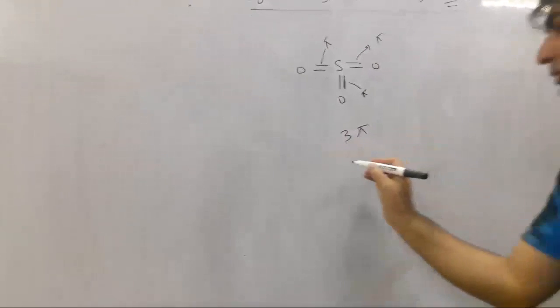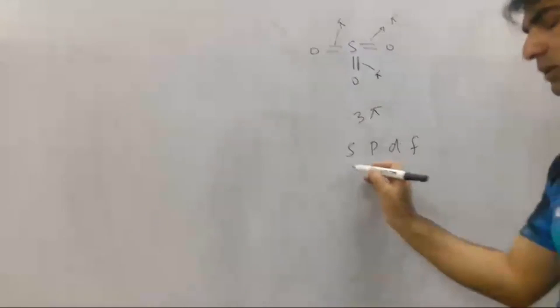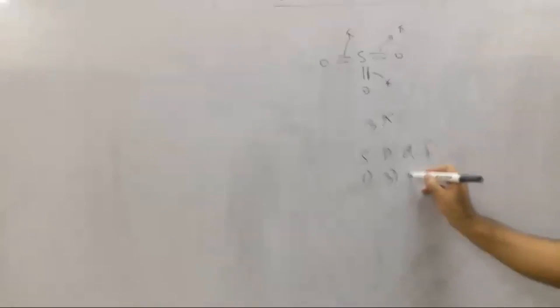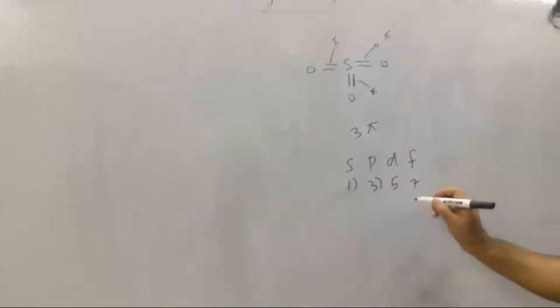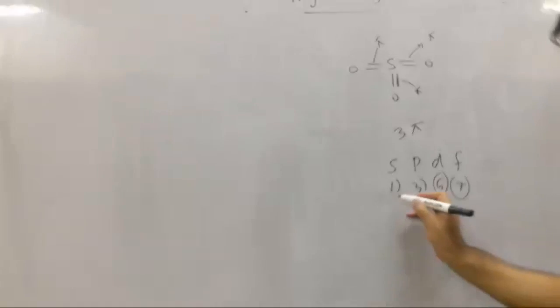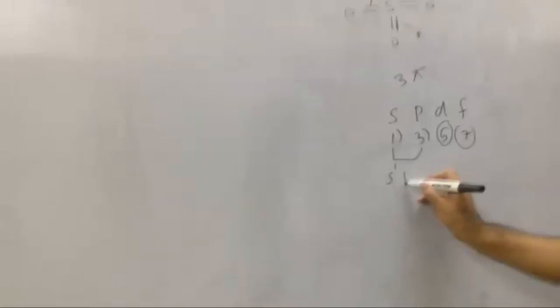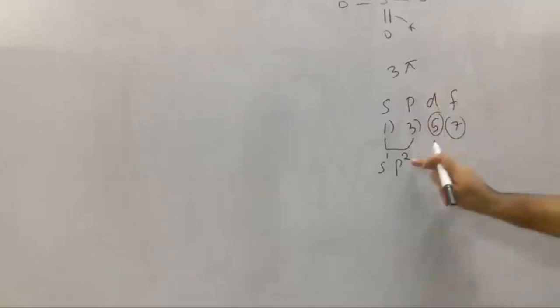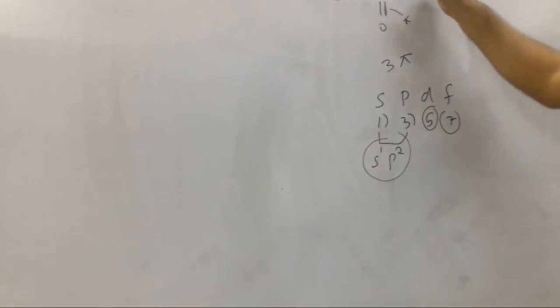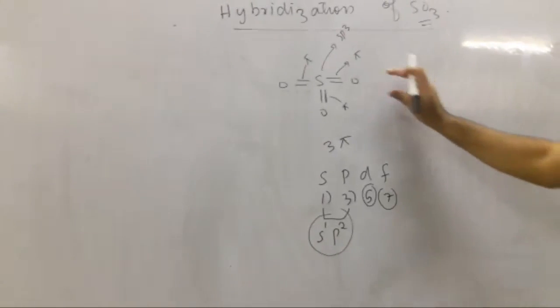What do you have to do? Write S, P, D, and F. You know that S has one orbital, P has three orbitals, D has five orbitals, and F has seven orbitals. These are three, right? Three. From here, one will be S and P will be two, so these are two plus one equals three. Three pi. So this hybridization is sp3.